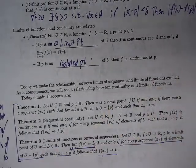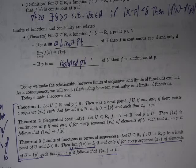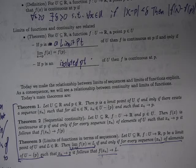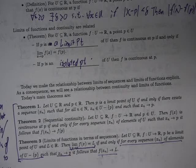Last time we were in the middle of proving the sequential formulation of continuity. U is a sort of domain, f is a function from U, and p is a point in U. Then f is continuous at p if and only if for every sequence of elements of the domain U which converge to p, it follows that f evaluated at that sequence converges to f of p.